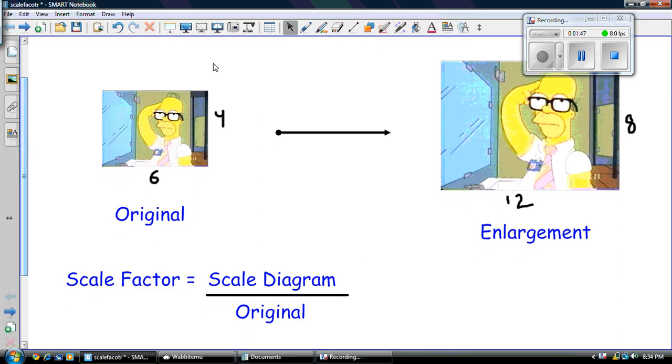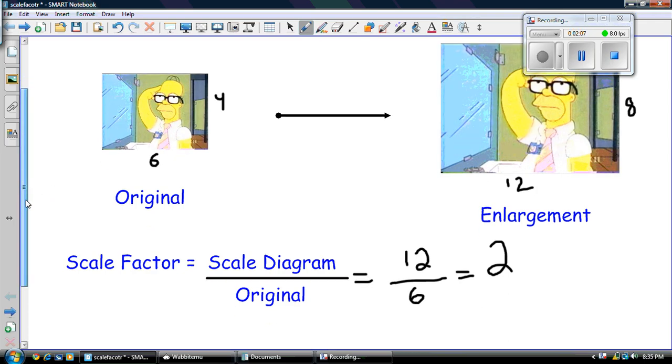So my scale diagram, I'll just pick a pair of corresponding sides. So my scale diagram, I'll pick this 12 divided by six, and that's going to be equal to two. So my scale factor is two, as simple as that.